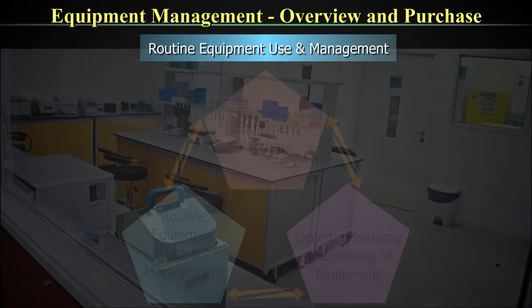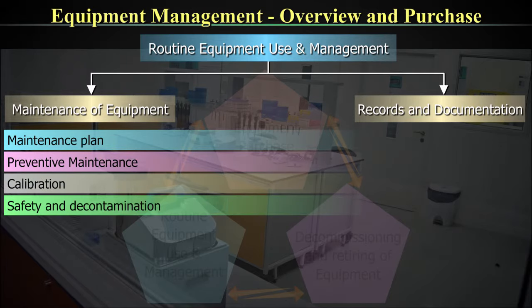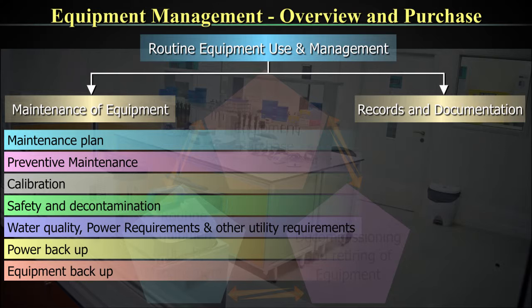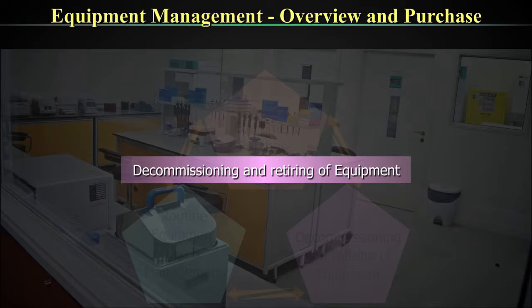The second larger component is routine use and maintenance of equipment, which includes a maintenance plan, preventive maintenance, calibration, safety and decontamination, water quality, power requirements and other utility requirements, power backup, equipment backup, and breakdowns and troubleshooting. Records and documentation of equipment is a very important aspect. Decommissioning and retiring of equipment is another aspect of equipment management we will look into further in later slides.